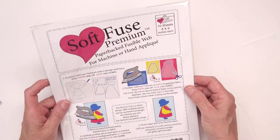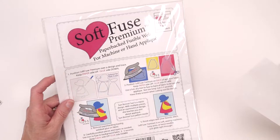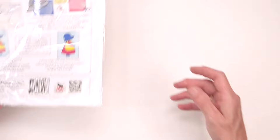I like to use soft fuse on my wool applique. It holds the wool in place on the block nicely and helps to keep it from fraying. Soft fuse is soft enough. It is the perfect choice for wool applique.